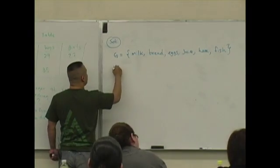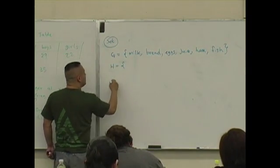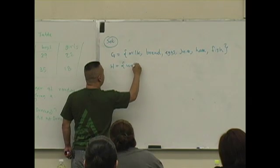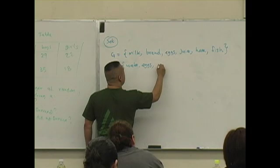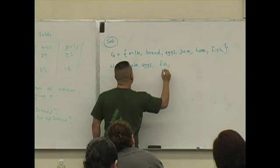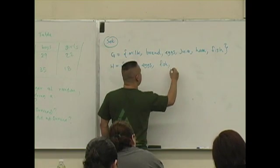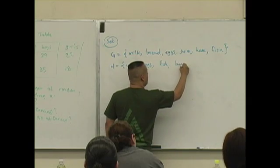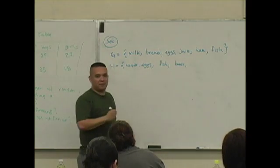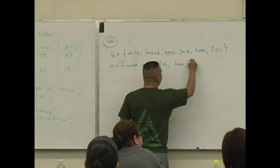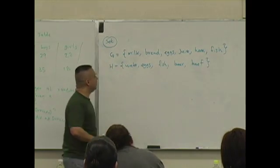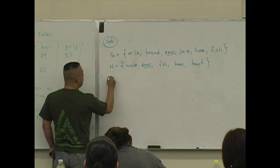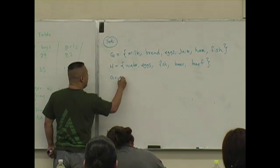And someone else goes to the grocery store. Let's say they got water, eggs, fish, beer, and beef. Okay, and this is what they purchase at the grocery store. Now if we consider the setting of the word 'and' in set theory, it's represented by this set operation. It's called the intersection.